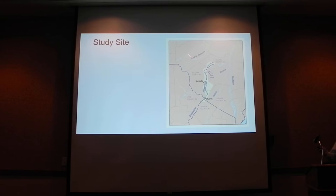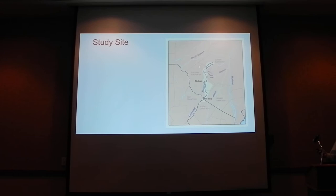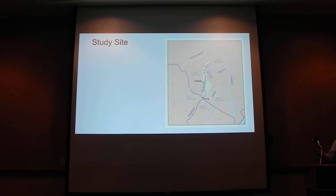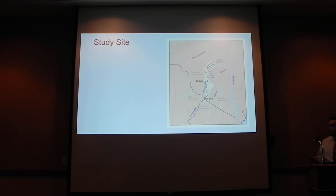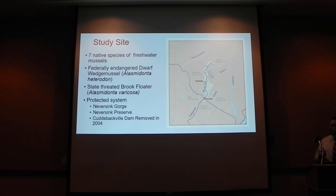Our study site is the Neversink, which starts up in the Catskill Mountains with its two branches. Just after the confluence we see the Neversink Reservoir, which is part of the municipal water supply for New York City — it was dammed in 1953. From there we have about 90 kilometers where the lower Neversink is fed by a hypolimnetic release, pulling from the bottom of the reservoir, making it a cold water system in its upper reaches, down to the Delaware at Fort Jervis.